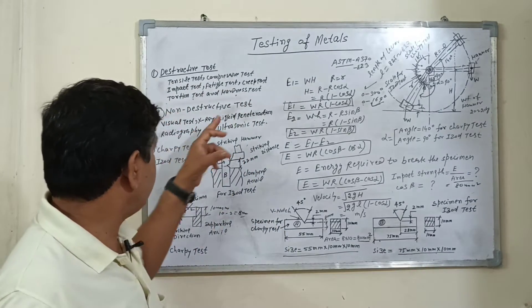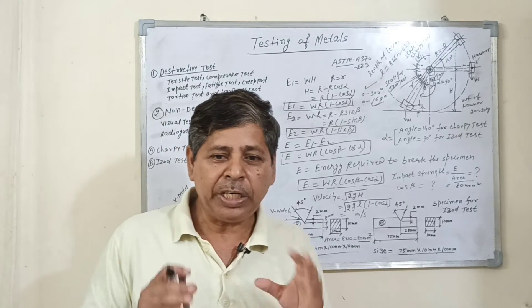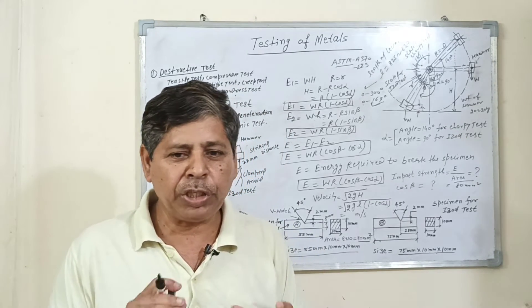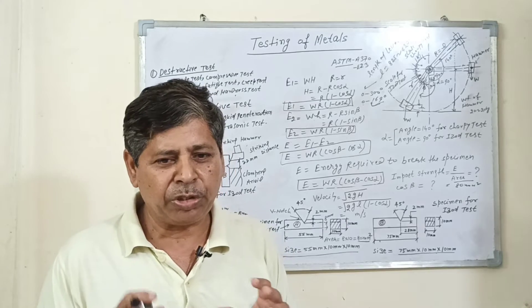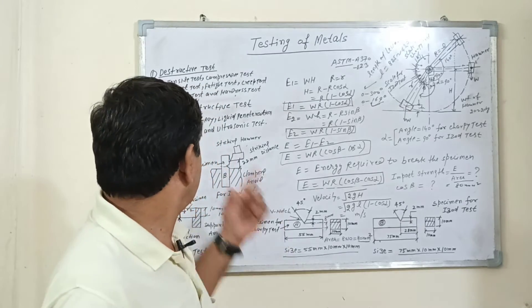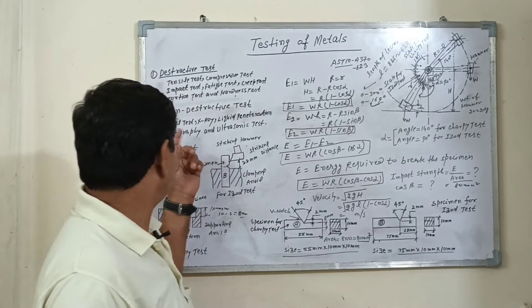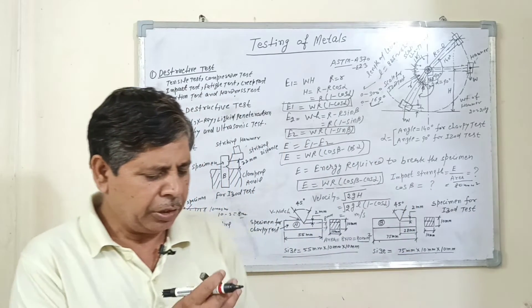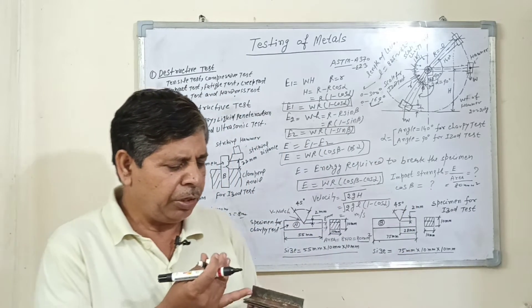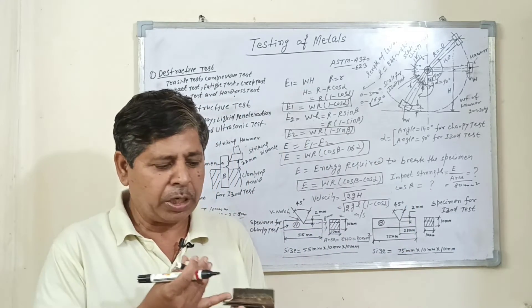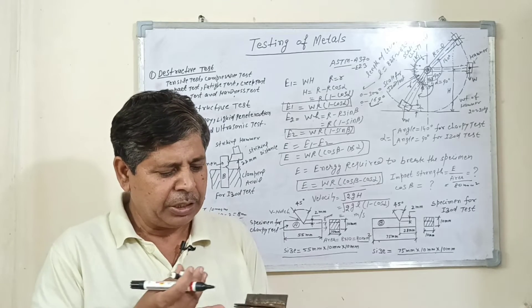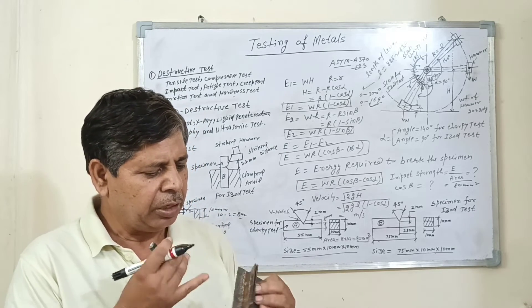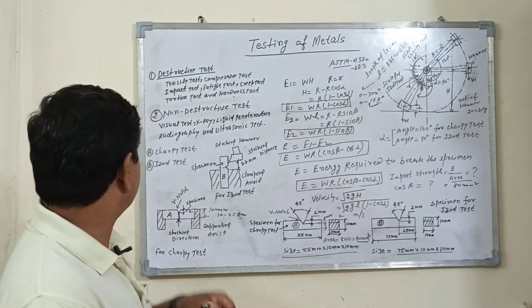Number two is non-destructive test. Non-destructive tests are those tests in which no force is required to check the test. Like the visual test — you can see the workpiece and determine if it is okay or not okay, whether the welding is good or not good, not zigzag. This is a visual test.